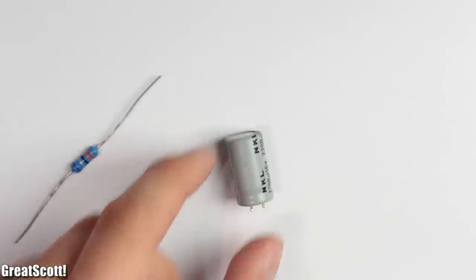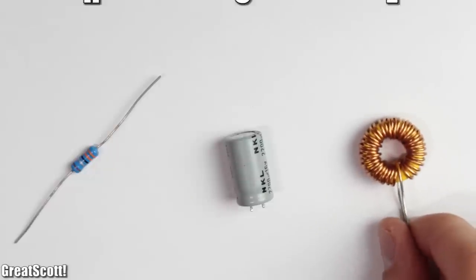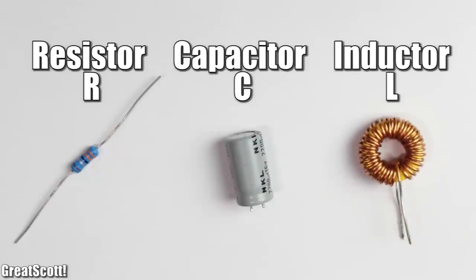Resistors, capacitors, and inductors or coils are the most important basic passive components in electronics.